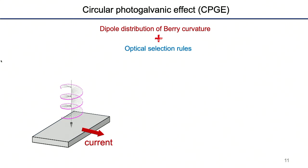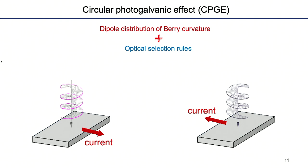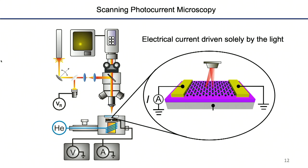If we have a dipolar or asymmetric distribution of Berry curvature, right-handed light excites one side of the Brillouin zone producing a group velocity carrying current in one direction, while left-handed light excites the other side and generates current in the opposite direction. A technical detail: the Berry curvature we care about is no longer at the Fermi surface but at the photo-excited states. In our Nature Physics paper we formulated the Berry curvature dipole using these photo-excited states — slightly different from the formula in the Hall effect lecture, which uses the Fermi surface.